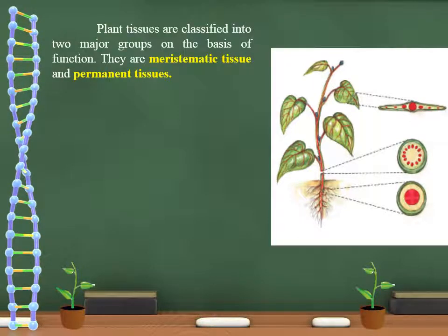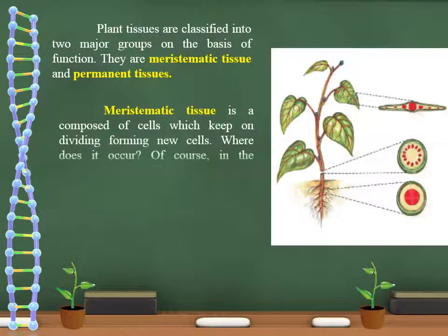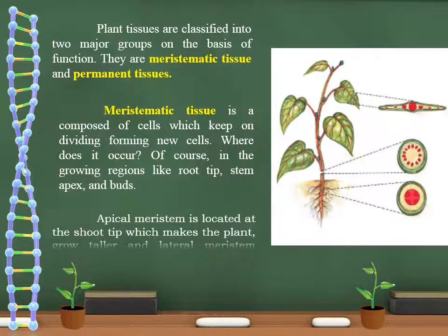Plant tissues are classified into two major groups on the basis of function: meristematic tissue and permanent tissue. Meristematic tissue is composed of cells which keep on dividing, forming new cells. It occurs in growing regions like root tip, stem apex, and buds. Apical meristem is located at the shoot tip, which makes the plant grow taller, and lateral meristem adds to the girth of the plant body.